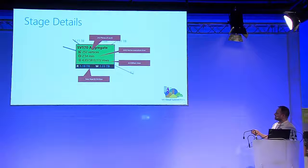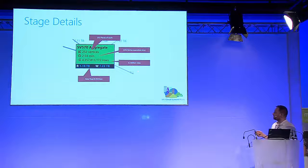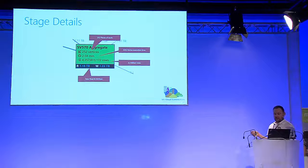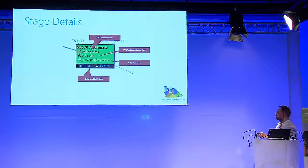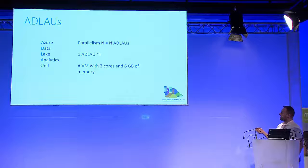Here we have one stage in our query plan with 252 pieces of work — those are the vertices. We have the average execution time for one vertex, and how many rows we read in total: 4.3 billion. Then we see how much data we read and wrote to disk inside Data Lake. Each vertex is executed on an ADLAU, which is a small virtual machine with two cores and six gigabytes of memory.